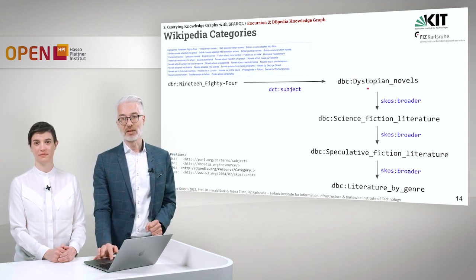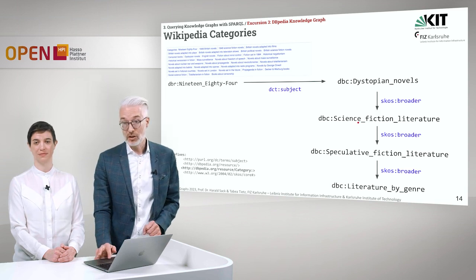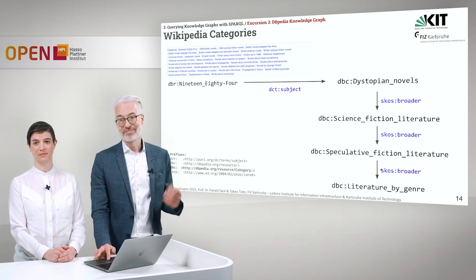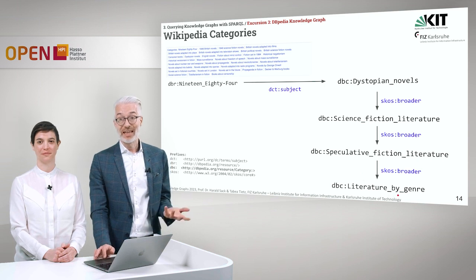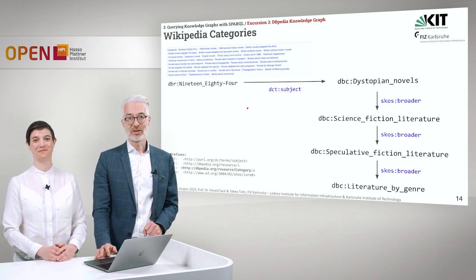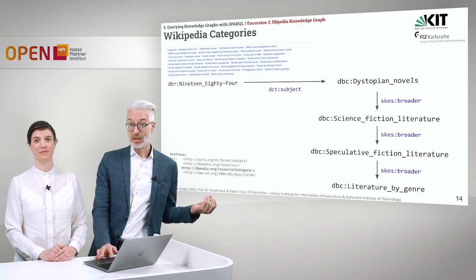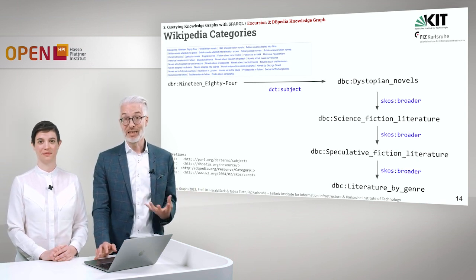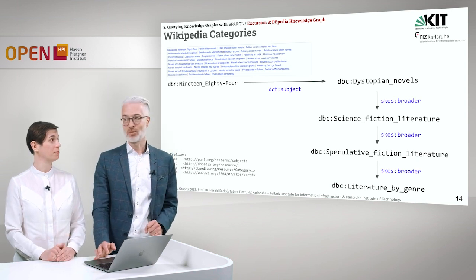Continuing the hierarchy: dystopian novels belongs to science fiction literature, which belongs to speculative fiction literature, which belongs to the broader thing 'literature by genre.' Note that this broader relationship is more loosely defined than a subclass — subclass has a strict formal definition requiring all instances of the first to also be instances of the second, which doesn't always hold here. There are only several hundred to a thousand classes in the DBpedia ontology, but more than 1.5 million categories in Wikipedia, where users have been rather creative — especially in popular culture areas like Star Wars or Star Trek.